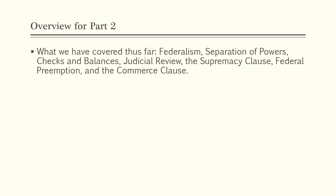So far, we've covered federalism, separation of powers, checks and balances, judicial review, the Supremacy Clause, federal preemption, and the Commerce Clause. Even just federal preemption and the Commerce Clause is a lot of information, and then we added in the rest of those other topics as well. So what's left in Chapter 5 to look at?